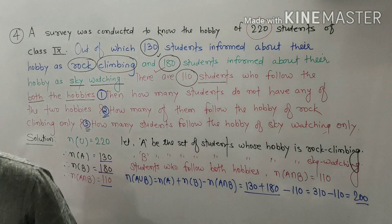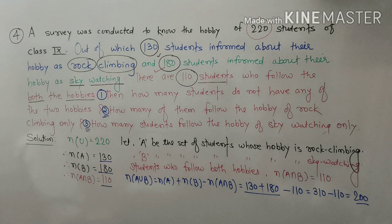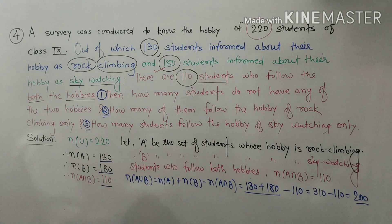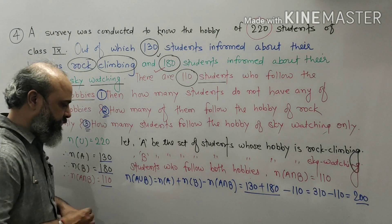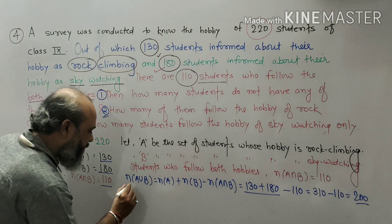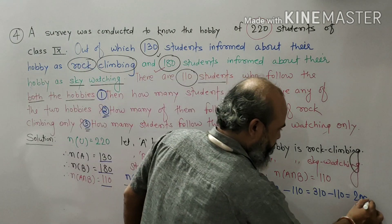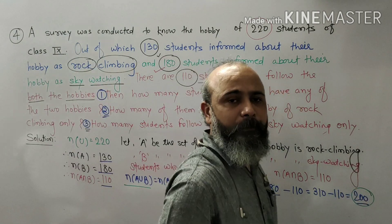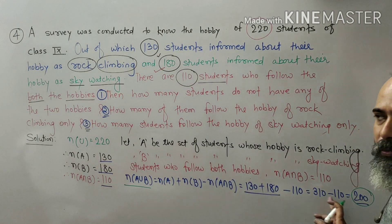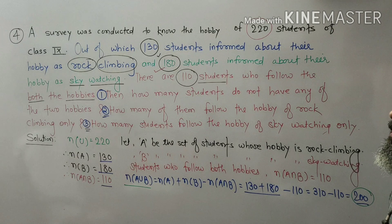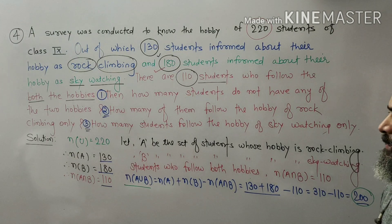So number of A union B is 200. This means there are 200 students whose hobby is either rock climbing or sky watching.